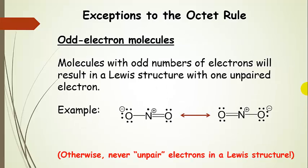Another really important exception is odd electron molecules. Sometimes you're going to add up electrons for a molecule and you're going to get an odd number. Nitrogen dioxide is a good example for that.